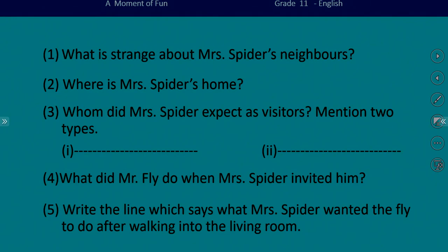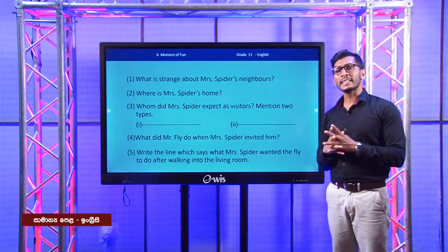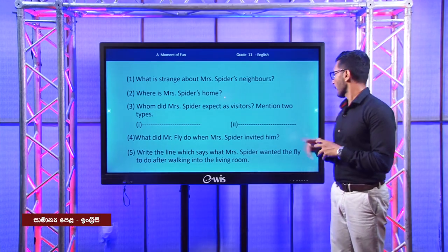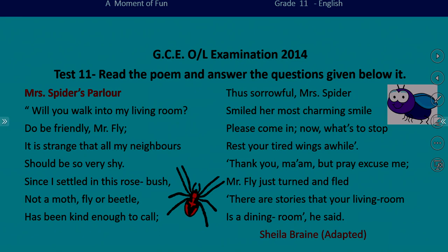See the third question: whom did Mrs. Spider expect as visitors — mention two types. Use your common sense. In a spider's web, usually insects can be seen as prey. Now can you see any insects in the poem? See this line: 'not a moth, fly or beetle has been kind enough to call.' So you can find the answer: moth, fly, or beetle.